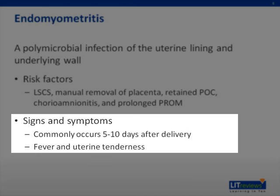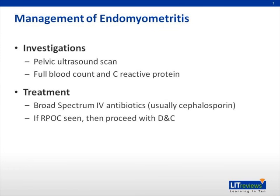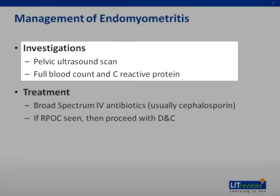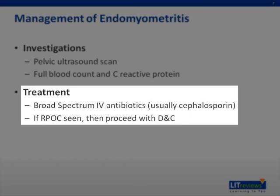Patients present with fever and uterine tenderness, typically five to ten days following delivery. Because retained products of conception can be the etiology of infection, ultrasound is often obtained to examine the intrauterine contents. Full blood count and C-reactive protein are also routinely done. Usually treated with broad-spectrum intravenous antibiotics such as second-generation cephalosporins. If products of conception are identified on ultrasound, dilatation and curettage is performed.